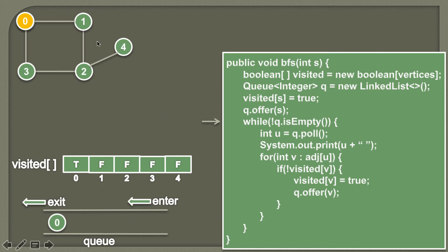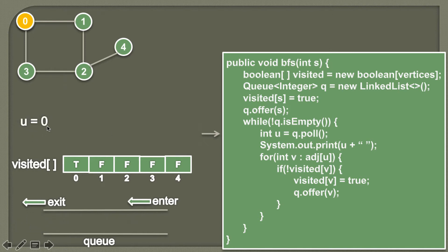To traverse each node level by level, we apply a while loop and check whether the queue is empty or not. Currently the queue is not empty, so the while condition is true. We pull the first element out of the queue, which is zero, and assign it to integer variable u. We then print this element on the console — zero is printed.